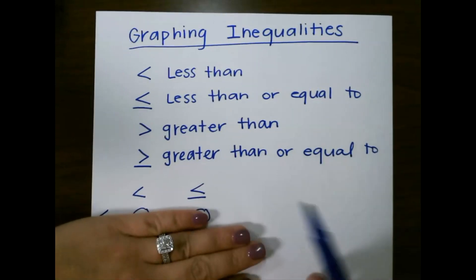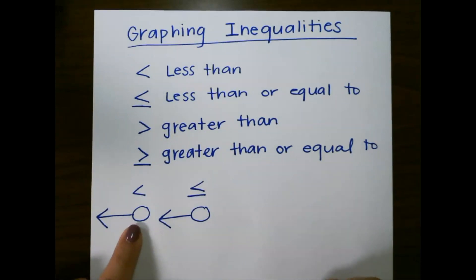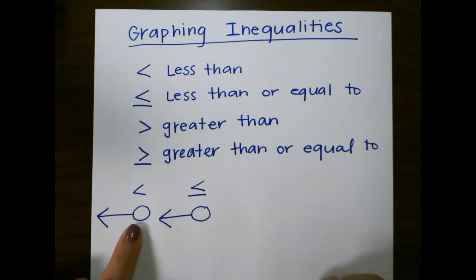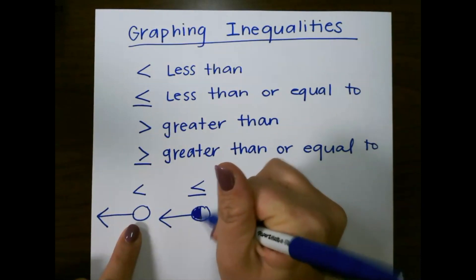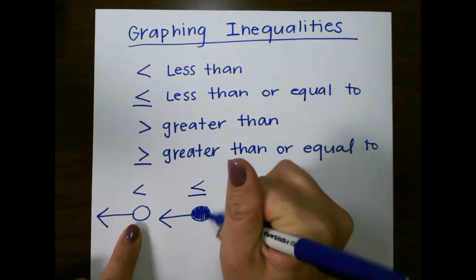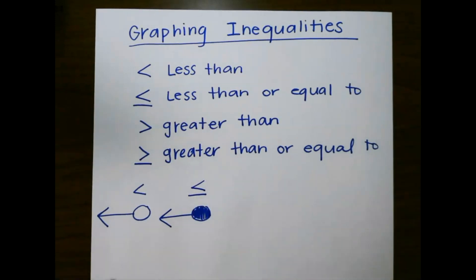For less than, we have an open circle that's going to be shaded to the left on our number line. Less than or equal to is going to have a closed circle also shaded to the left.